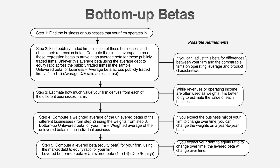I'm going to use this as my building block for an alternative to regression betas — I call these bottom-up betas. Here's what I do: you tell me what business or businesses you're in — say, steel and chemicals. I go and find as many publicly traded steel companies and chemical companies as I can. Because they're publicly traded, I can look up their regression betas. I average them out to get an average beta for steel companies and for chemical companies. Then I clean up for how much debt those companies have — that's called unlevering the beta — and I end up with a pure business beta for being in steel and chemicals.